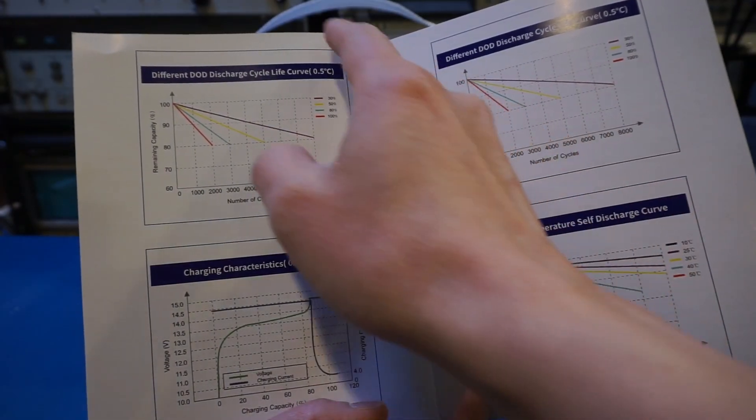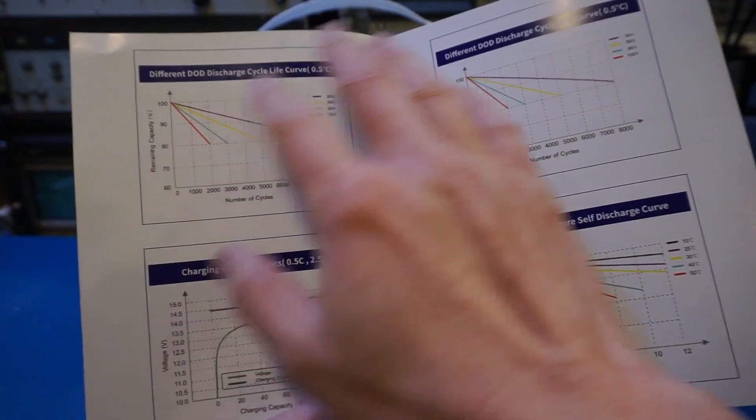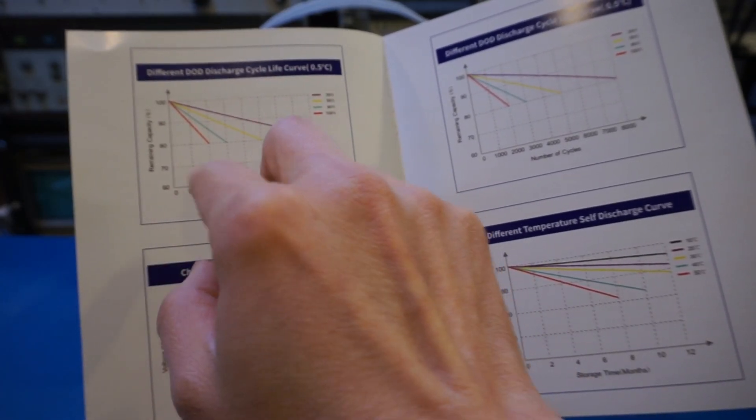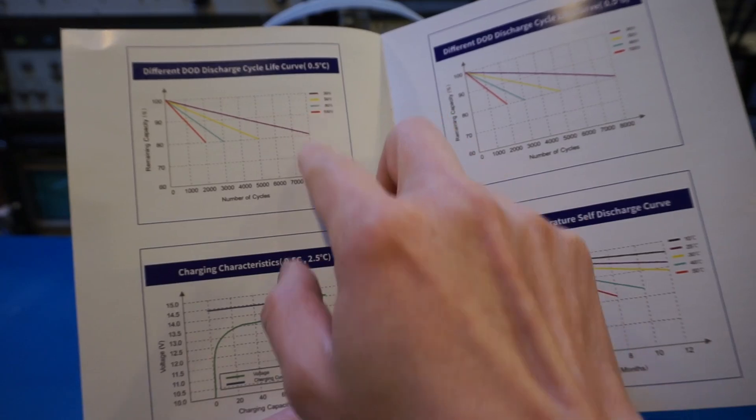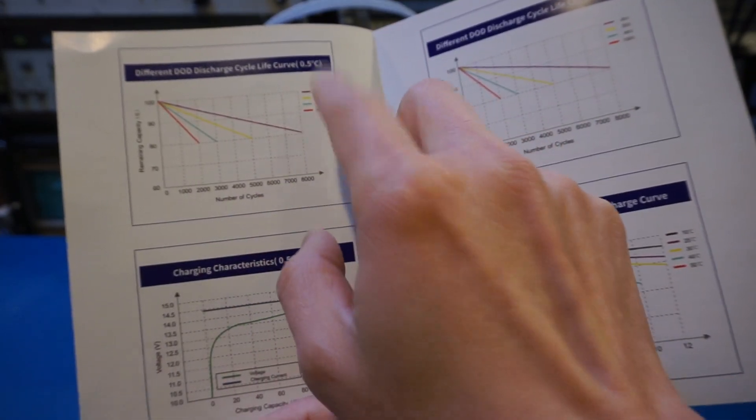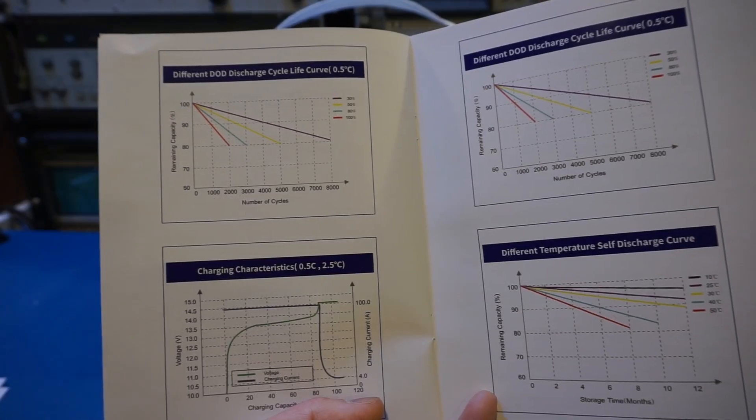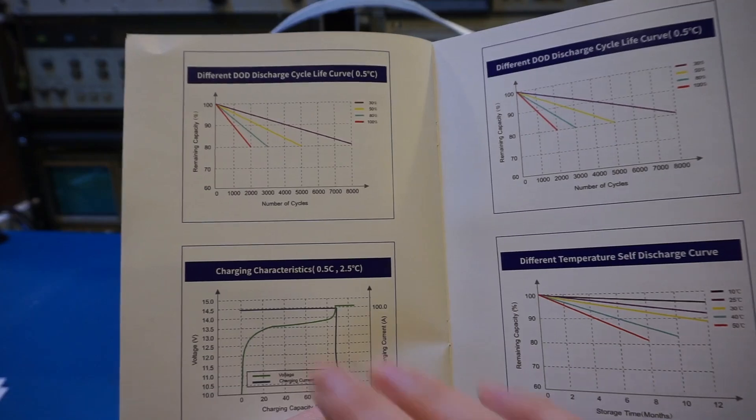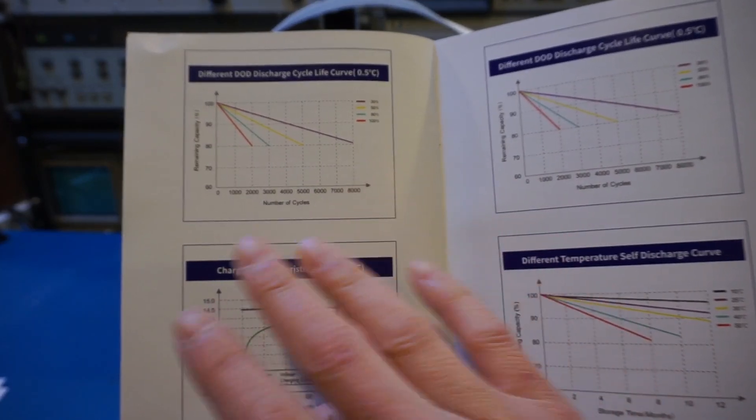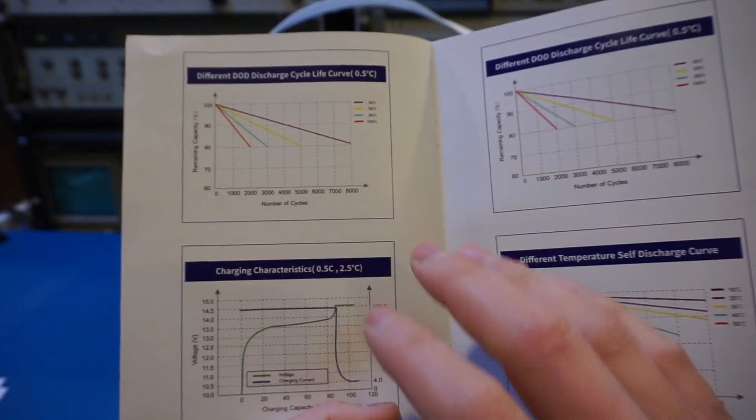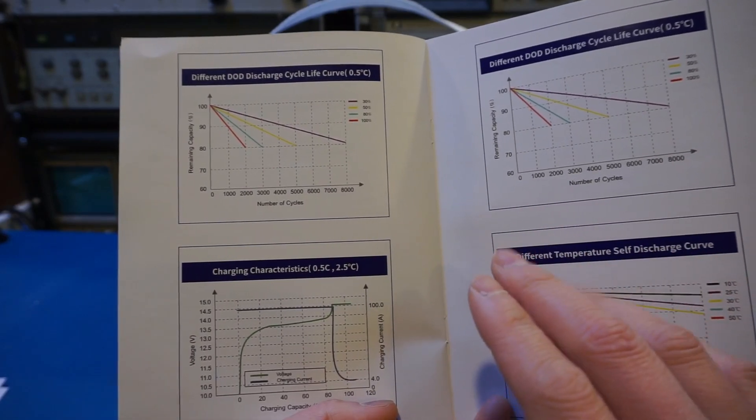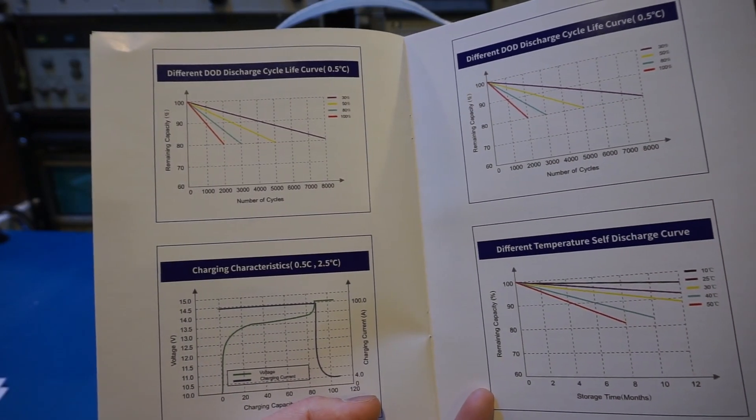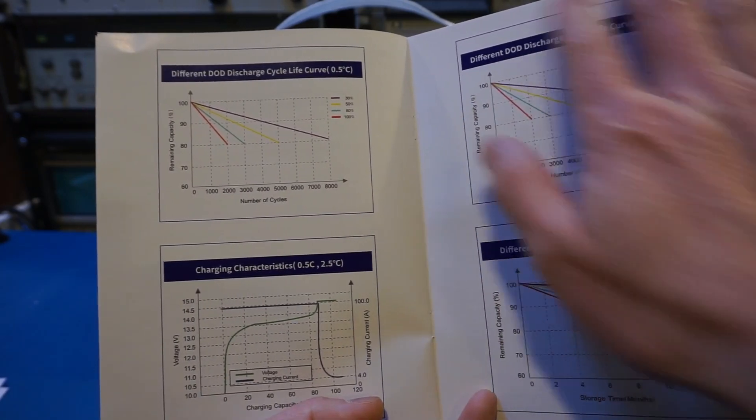The top graph here shows the relationship between cycle life and discharge depth. You can see that with a discharge depth of 100 percent you only get around 2000 cycles, but if you are doing much shallower discharge, for example at 30 percent, then you can get up to 8000 cycles. The numbers shown here are very consistent with other LFP batteries. I'm not sure if these figures are specifically for VATRER batteries or just for LFP batteries in general, as producing these figures requires a very large sample size.